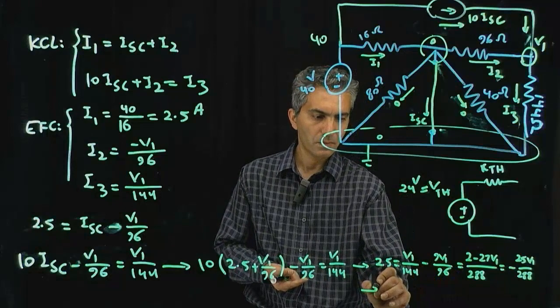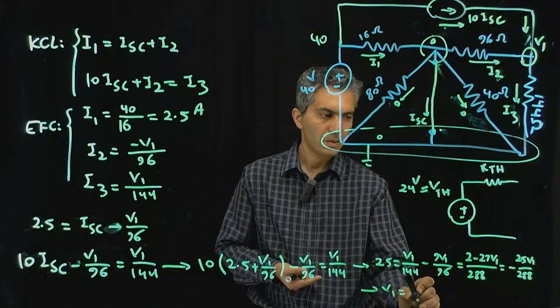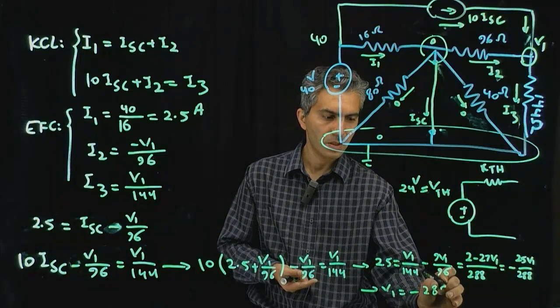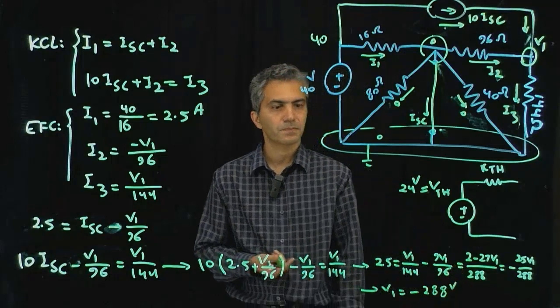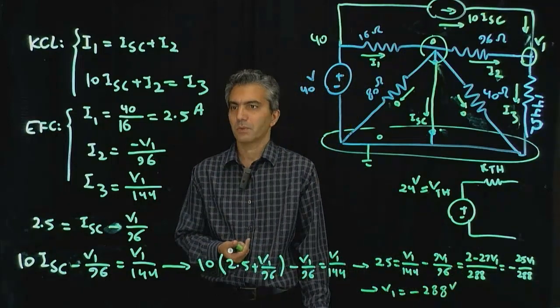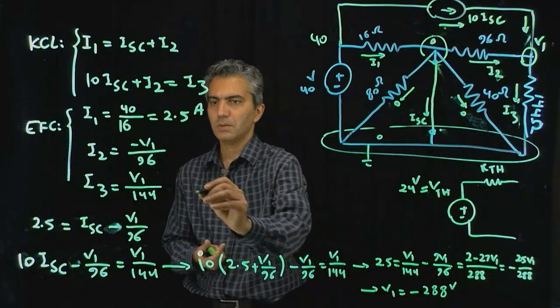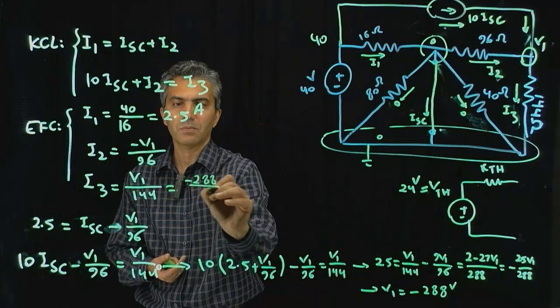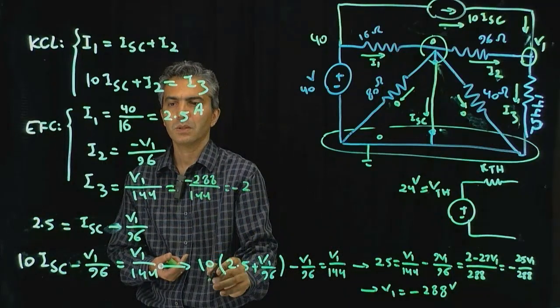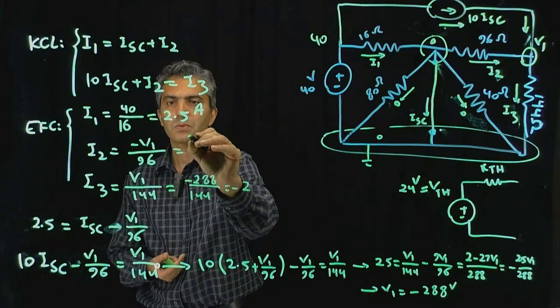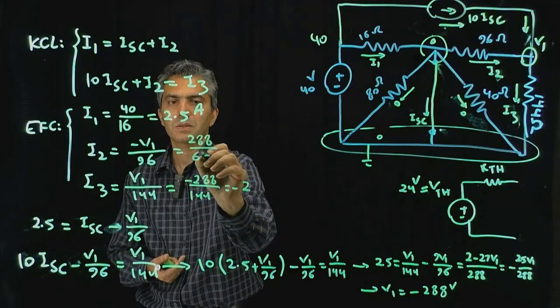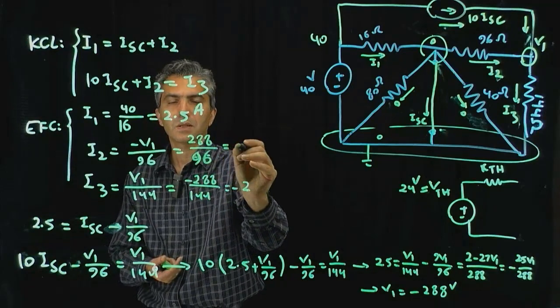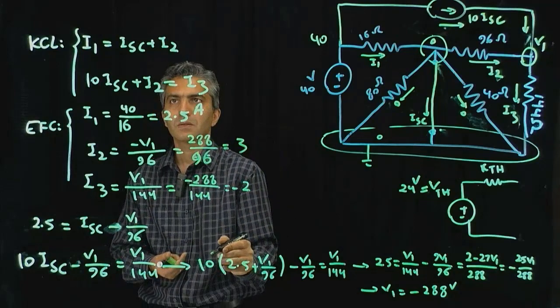V1 is actually minus 288 volts. And this is 288 divided by 96, and that's 3.